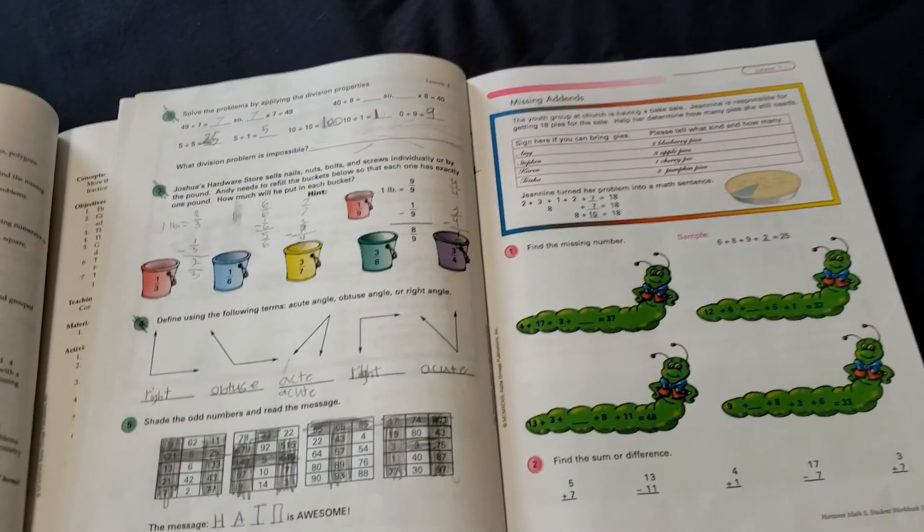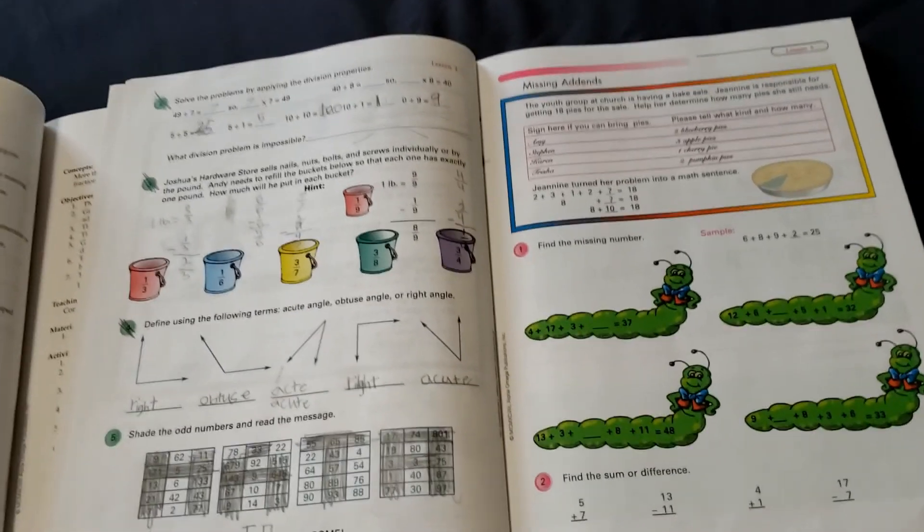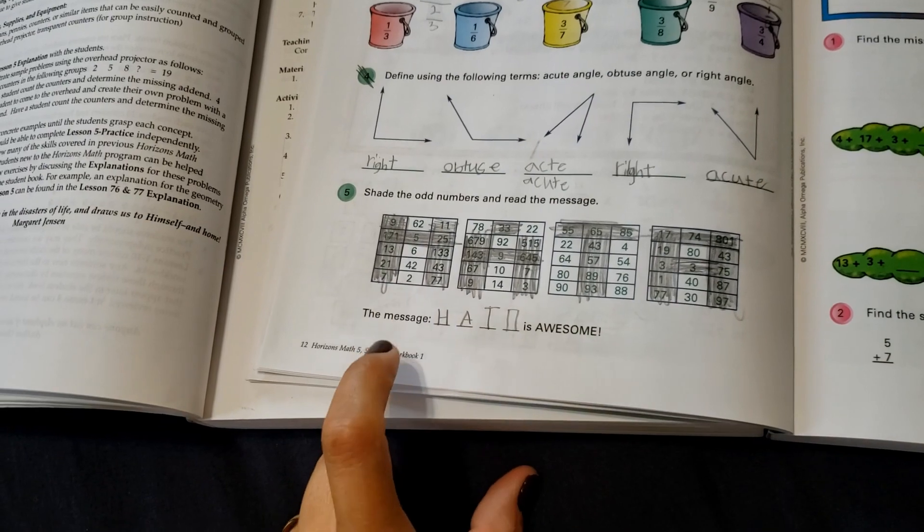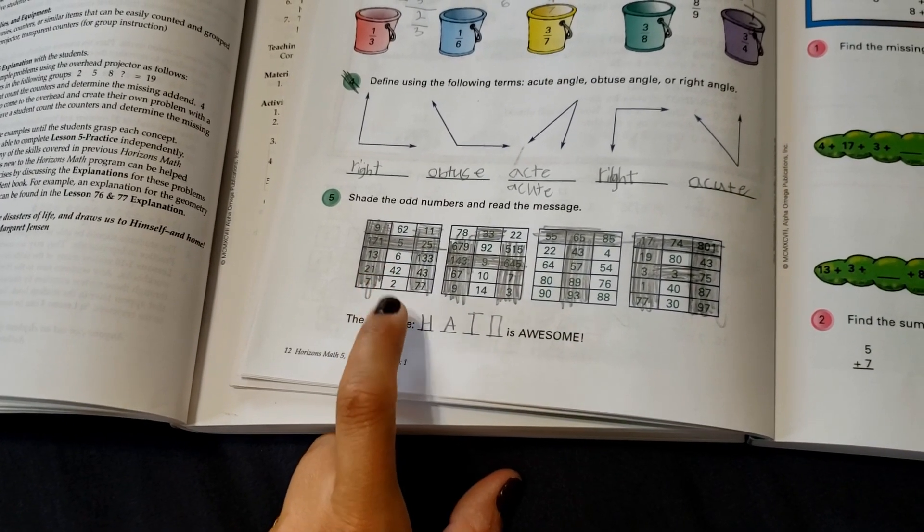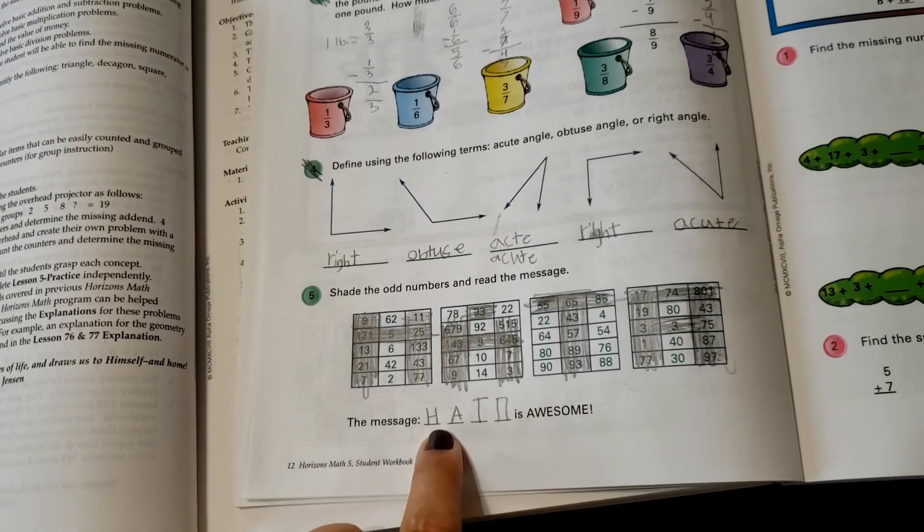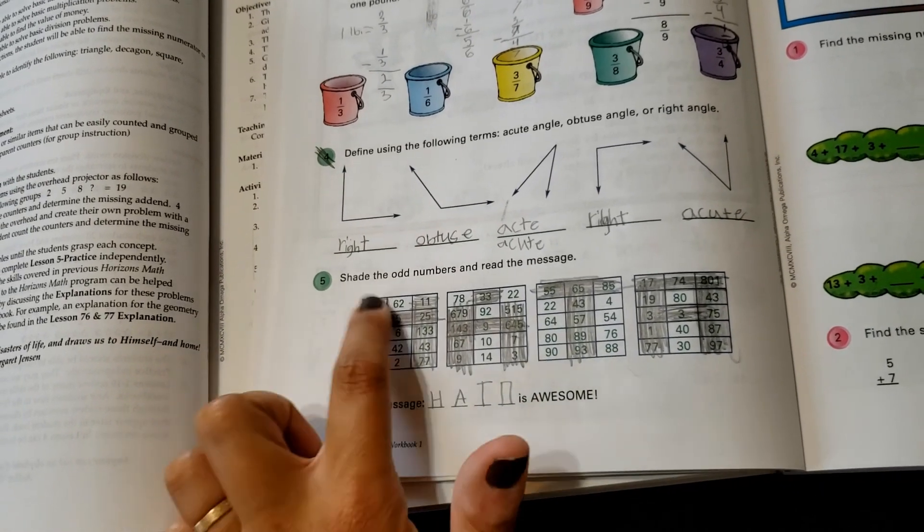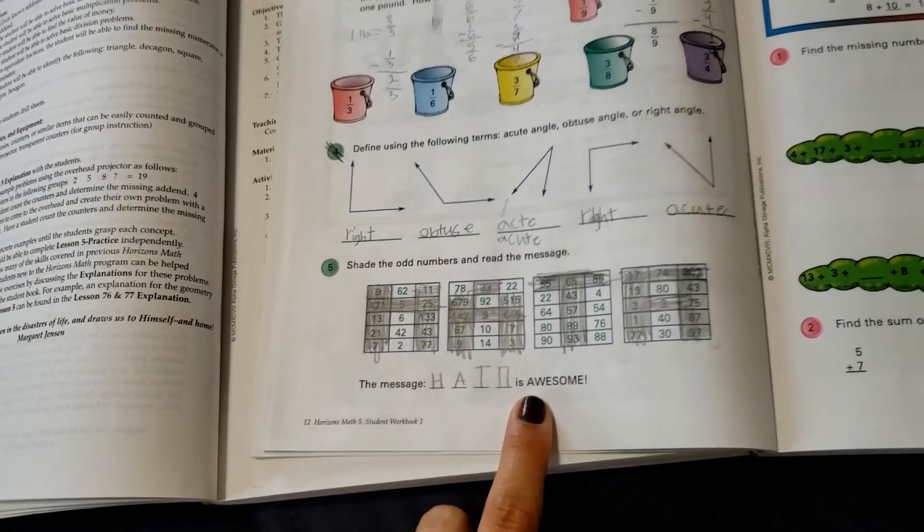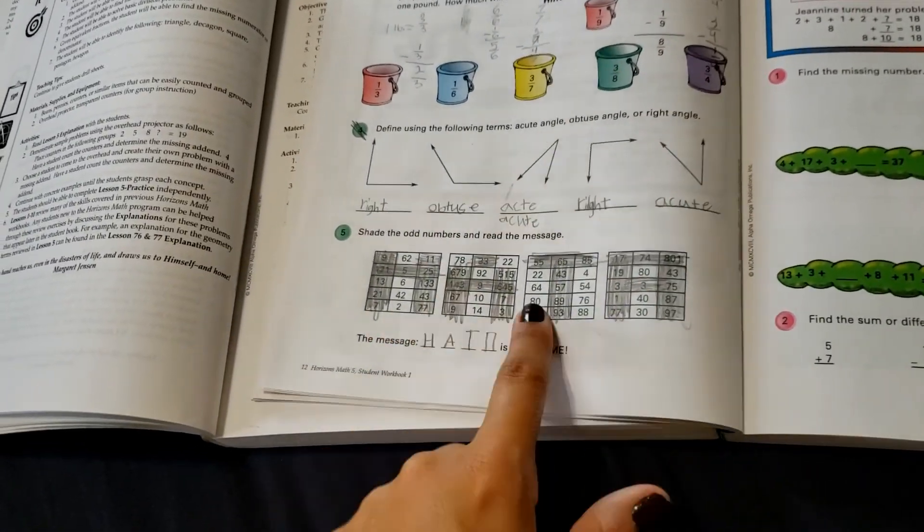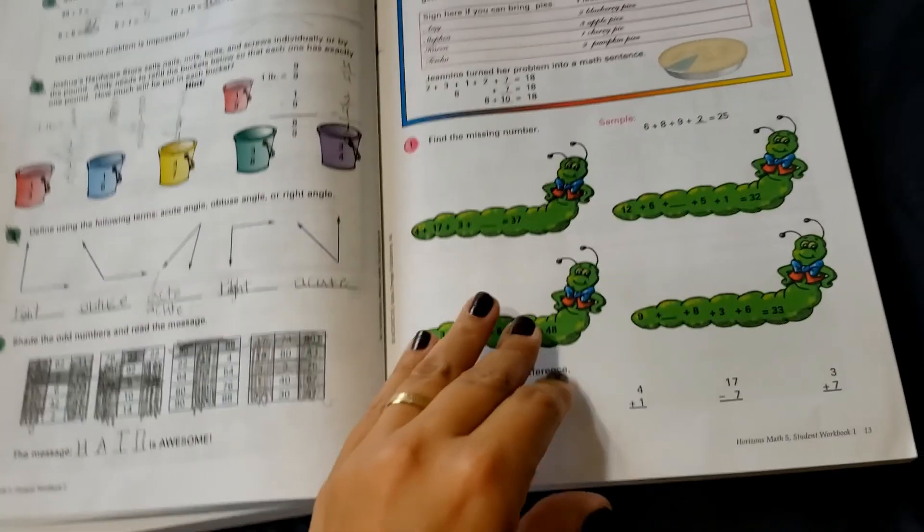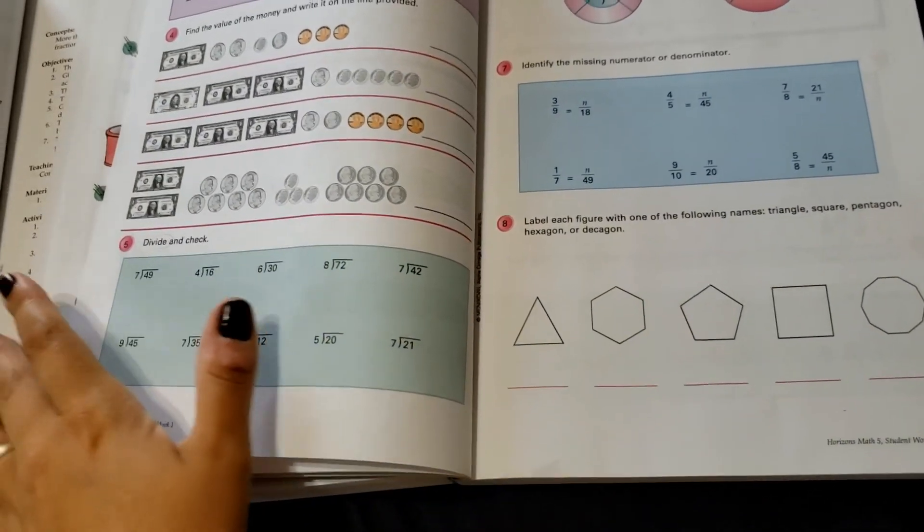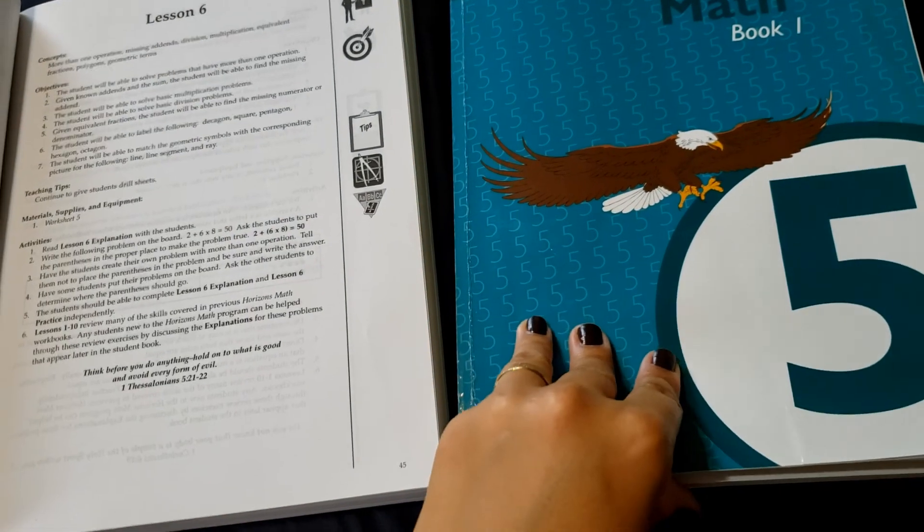He will work through the, like this one, we need to finish, did he miss? I think he just, yeah, I think that's supposed to be an M not half this. So we'll have to go through and clarify on this section here anyways. So yeah, he'll work through that and then I'll grade it and then we will move on from there. So.